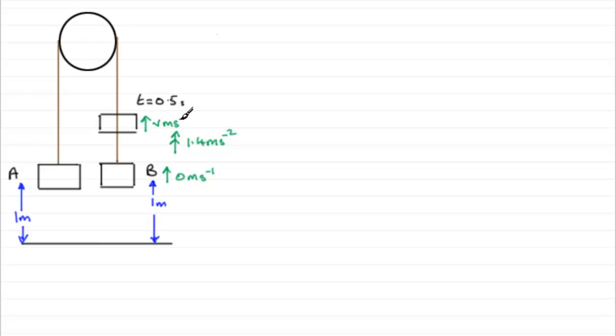And we also need to establish how high it's risen. We'll call that H meters. So to do this first part, to get H and V, we need to consider a SUVAT equation. S, U, V, A, and T. And we're going to take upwards as positive because it's moving in that direction. So what's S going to be? Well, it's going to be H meters.